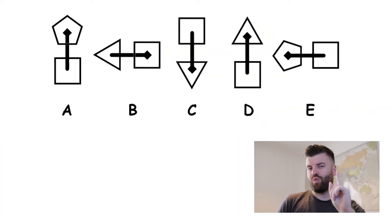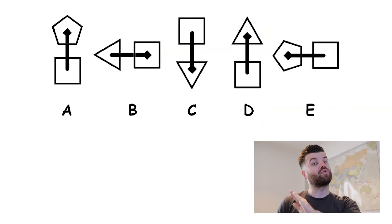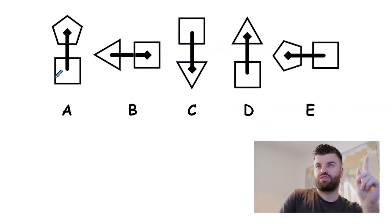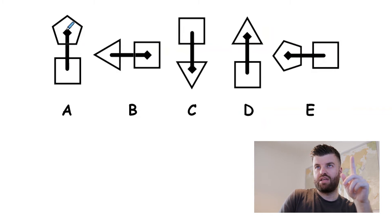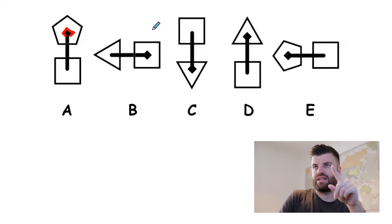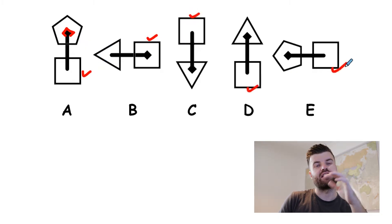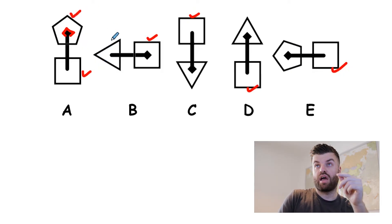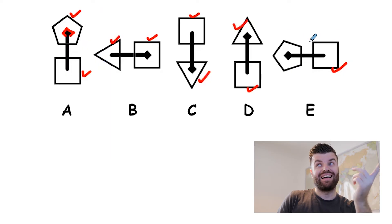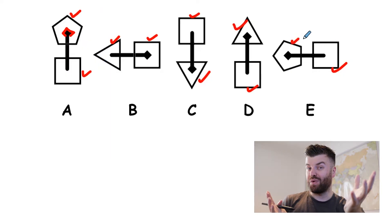Let's take a look at another one, remembering this logic: we need one shape that's different to the other four, and those four have to be the same. Looking at A, we're given a square and a pentagon with a line joining them and the head of an arrow inside the pentagon. The next shape also has a square. Do all of these shapes have a square? Yes, yes, and yes. So it's nothing to do with having a square. Looking at the second shape, we have a pentagon, a triangle, a triangle, a triangle, and another pentagon.